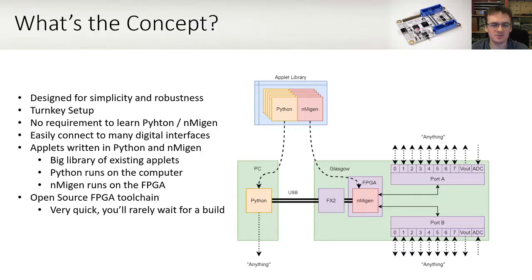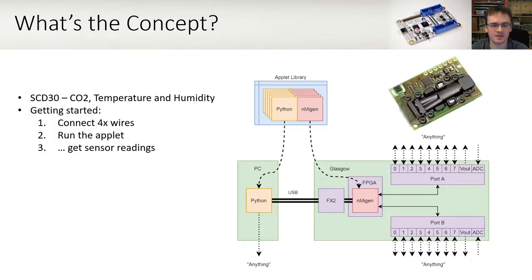We have a planned structure for contributions from the community. We expect good and tested applets to be in-tree, with untested community contributions in a separate repository. We will also have the ability to handle private applets in your own private trees as well. Glasgow uses the open-source FPGA toolchain, which is very quick. You'll rarely find yourself waiting a significant time for the gateway to build. To give you a getting started example, you can connect an SCD30 — which is a CO2, temperature and humidity sensor — with only four wires to Glasgow, and immediately get sensor readings.